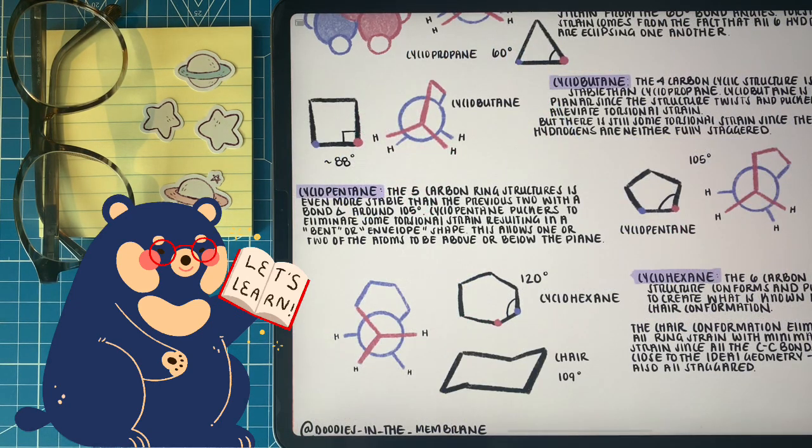Now finally, we are off to talking about cyclopentane. Cyclopentane is a little bit more relaxed, since it has a bond angle of 105, and the desired is 109.5. So we still have a little bit of angle strain, but not in comparison to cyclobutane and cyclopropane. On top of this, cyclopentane puckers, or slightly moves some of its bonds, to help relieve the angle strain. This forms a bent or envelope shape, which allows one or two of the atoms to be above or below the plane.